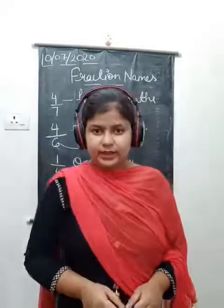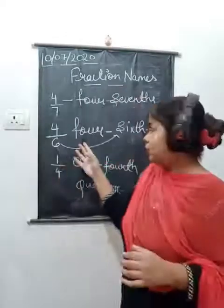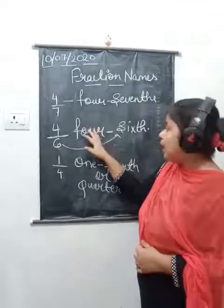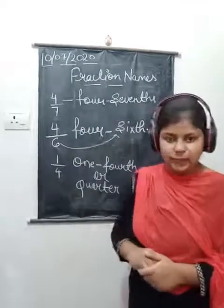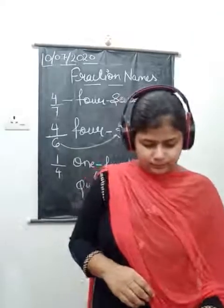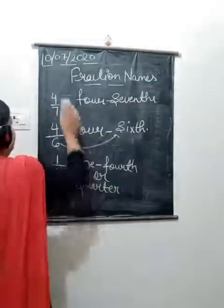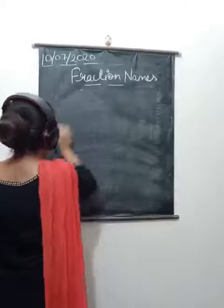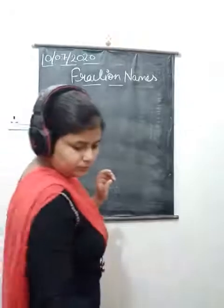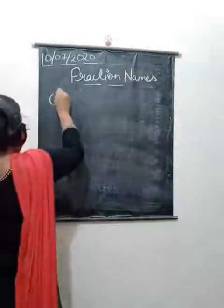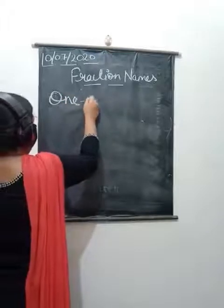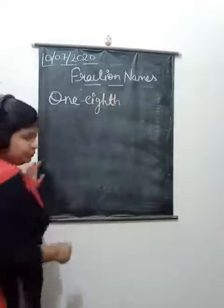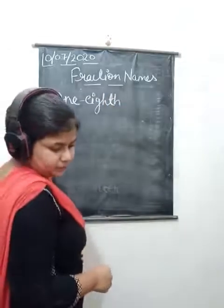Let's do vice versa. Vice versa means now we will go from word to number. Next we are going to do: word form to number form. I am going to take some questions: one eighth, five tenth, two fifth, two third.